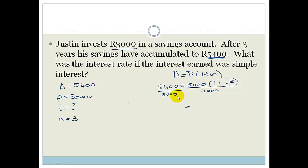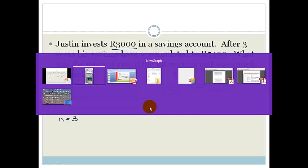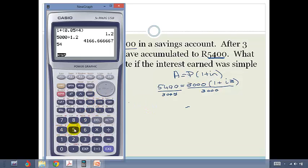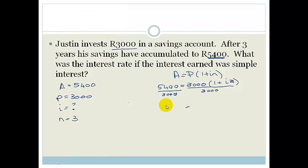So let's divide both sides by 3,000. So if we do that, we get cancel, cancel, cancel, cancel. And then if we don't know how to do it, we can pop it on our calculator. And we've basically got 54 divided by 30. And we end up with 1.8. So we've got 1.8 equals 1 plus 3i. So if we take this 1 across, we've got 1.8 minus 1 equals 3i. So 1.8 minus 1 is 0.8 equals 3i. So to get the interest, what do we do? We divide both the left-hand side and the right-hand side by 3.